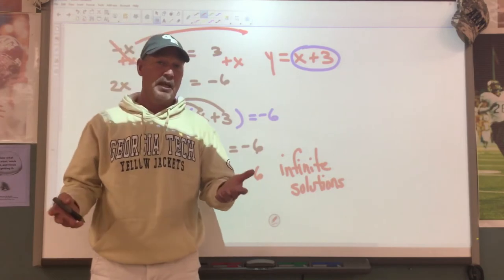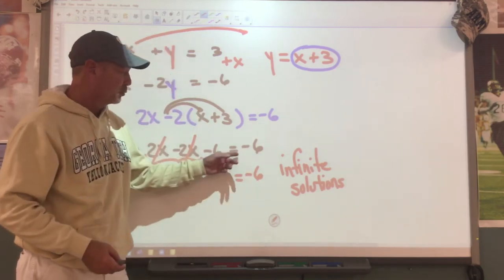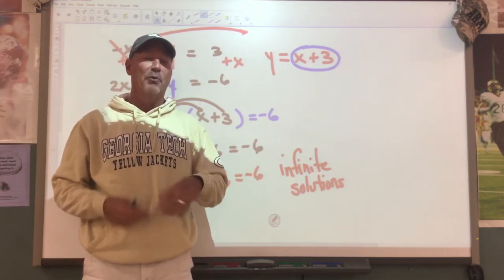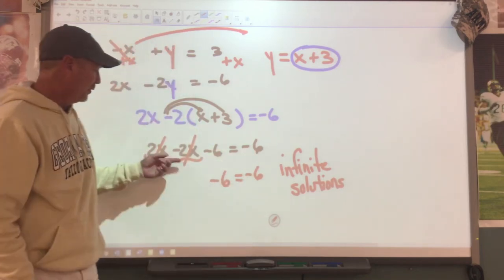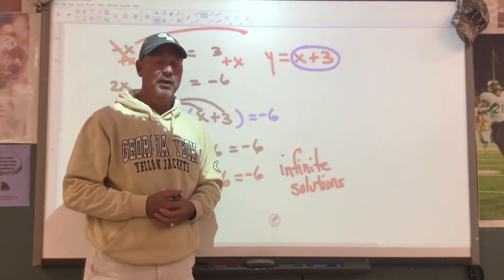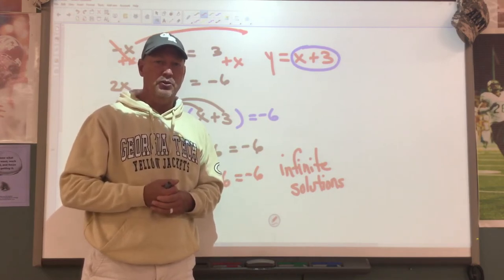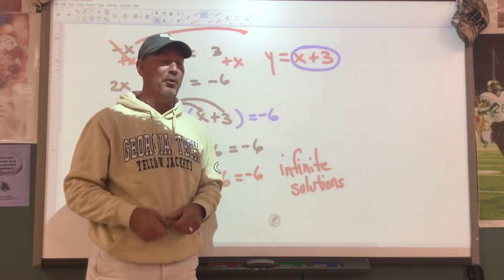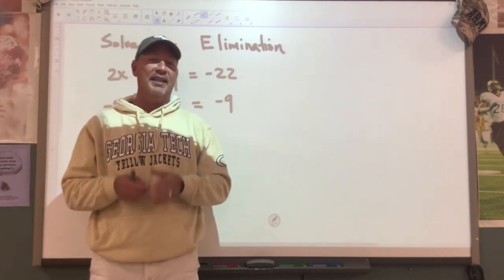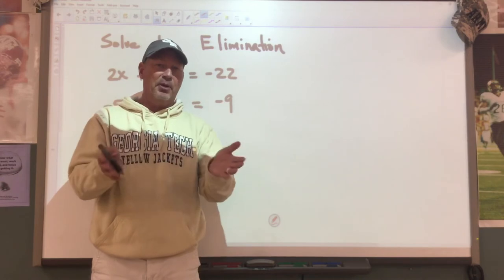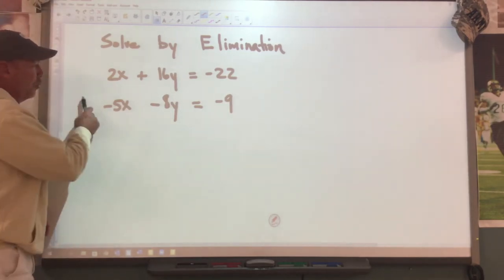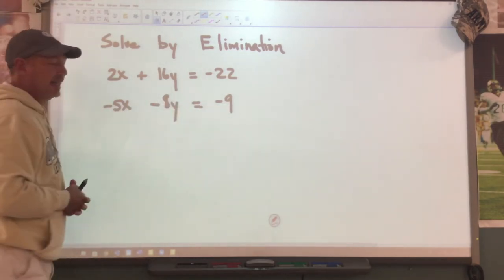Negative 6 equals negative 6 - when this happens, you need to write infinite solutions. So what are your three choices? The first example: variables canceled, false statement, we wrote no solution. Second example: we got one exact solution and wrote it as an ordered pair. Third example: variables canceled, true statement, we wrote infinite solutions. These are three examples of how you use the substitution property. Now we're going to learn how to do the elimination method. When we say elimination, that means we would like to get a variable that cancels and disappears.